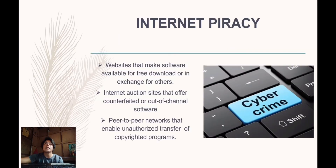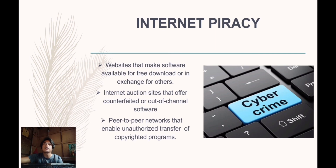Next is internet piracy. This occurs when software is downloaded from the internet. The same purchasing rules apply to online software purchases as for those in compact disk format. Common internet piracy techniques include websites that make software available for free download or in exchange for others, internet auction sites that offer counterfeit or out-of-channel software, and peer-to-peer networks that enable unauthorized transfer of copyrighted programs.